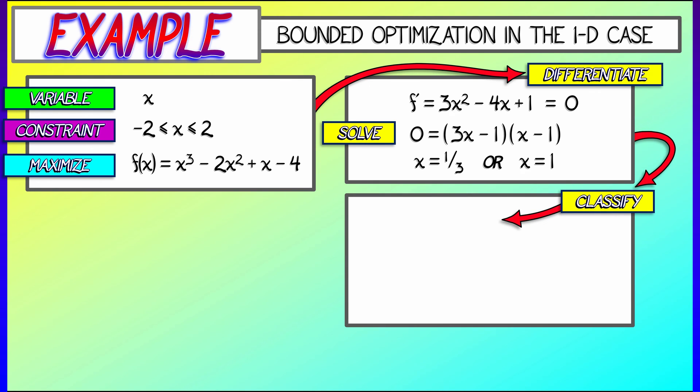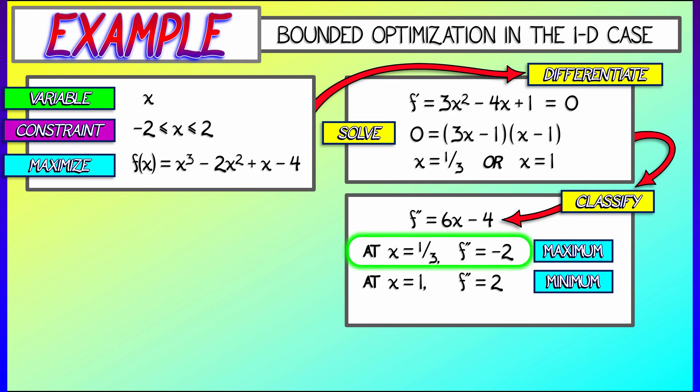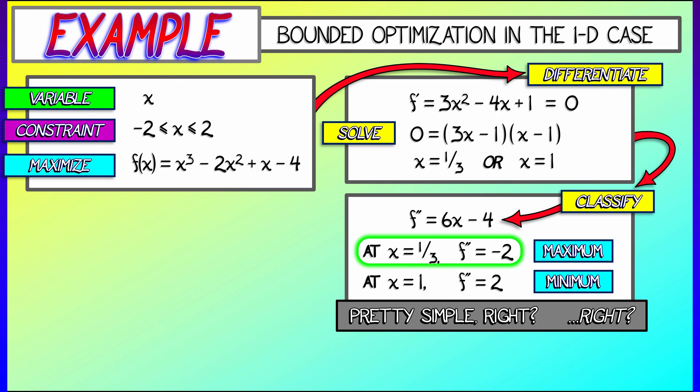We can classify them through the second derivative. f double prime is 6x minus 4. When we evaluate that at 1/3, we get negative 2. When we evaluate that at x equals 1, clearly we get positive 2. I remember, negative second derivative, that's a maximum. Positive second derivative, that's a minimum. Our goal was to maximize, so it looks like x equals 1/3 is it.